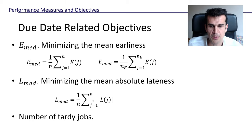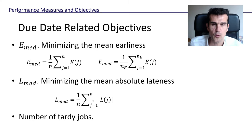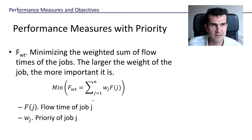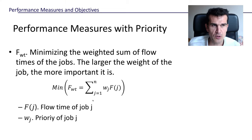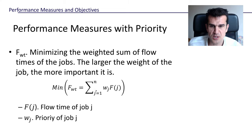An important consideration is that not all jobs are equally important. Some jobs may have more economic value, or you may be penalized more heavily for delivering certain jobs past their due date. When jobs have different levels of importance, you can redefine all these performance measures by assigning different weights to different jobs — giving higher weights to the most important jobs — and then minimize or maximize the weighted sum of whichever performance measure you're interested in.